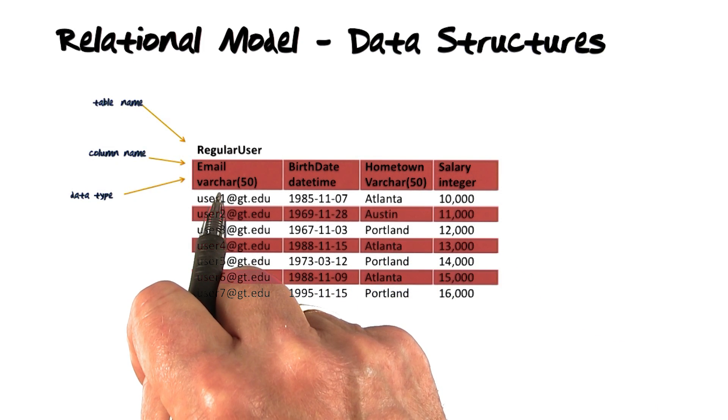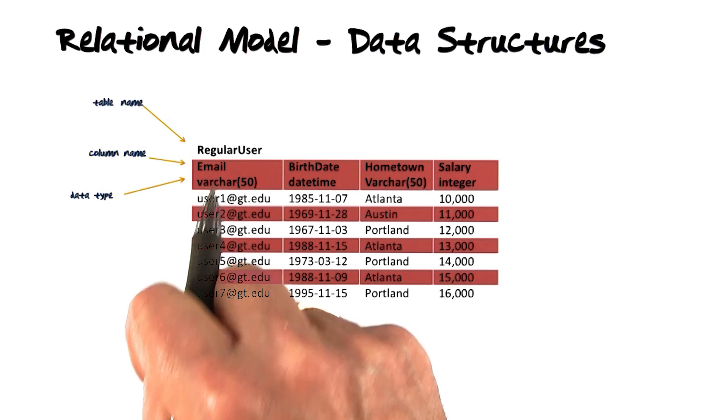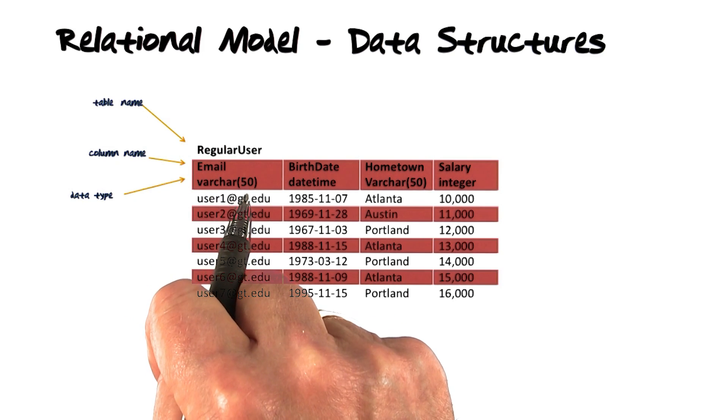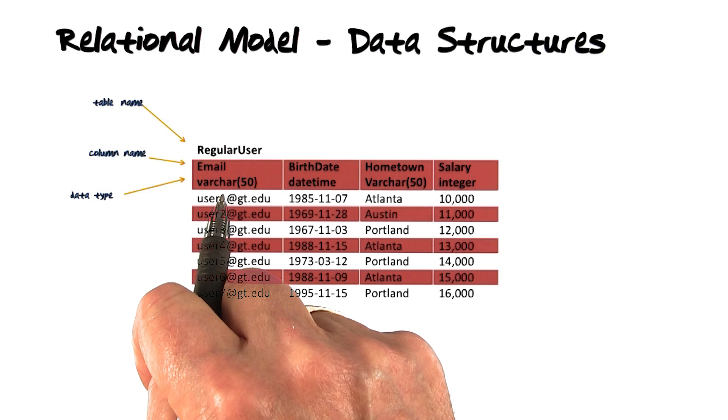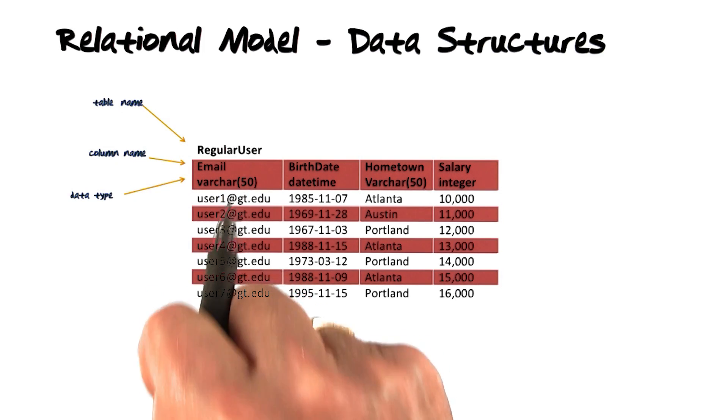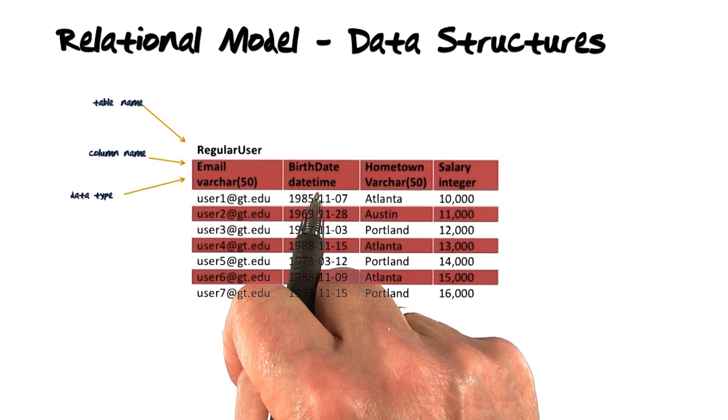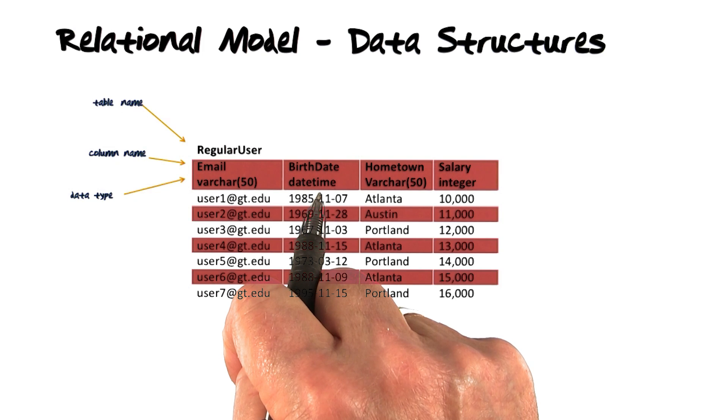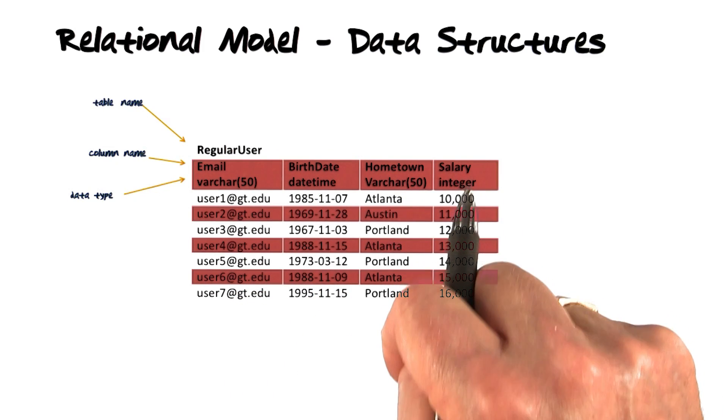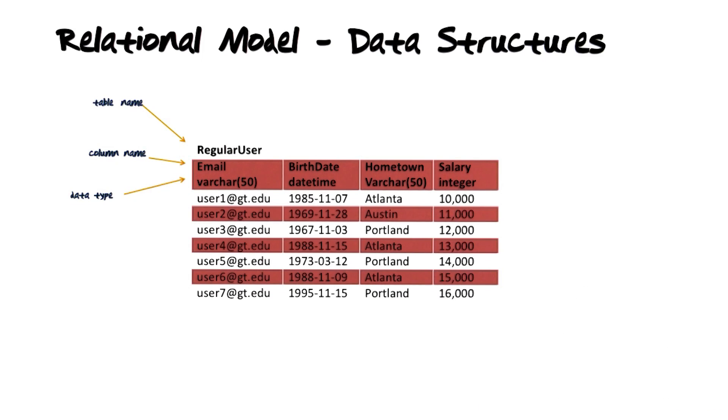Each one of the columns has a data type. In this case, emails are represented over varchar 50, variable length character strings with maximum length 50. Birthdate is represented over datetime data type. Hometown again over varchar 50. Salary is represented over the data type integer.